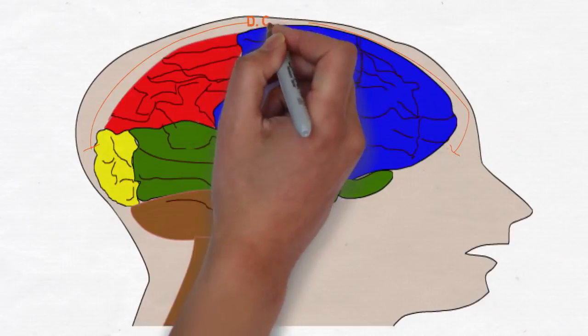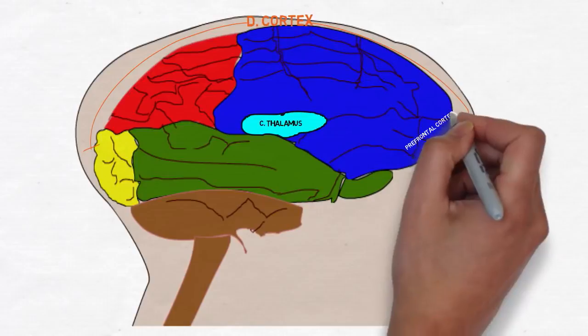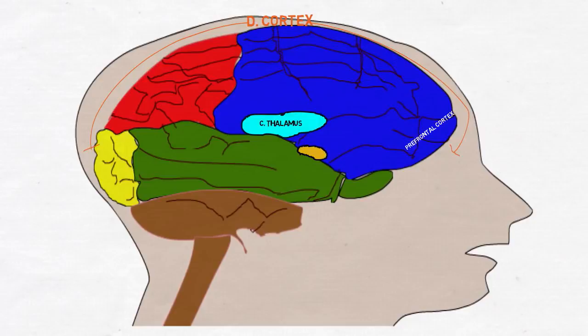The cortex then gives raw sights and sounds meaning, enabling you to be conscious of what you are seeing and hearing. I'll mention here that the prefrontal cortex is vital to turning off the anxiety response once the threat has passed.